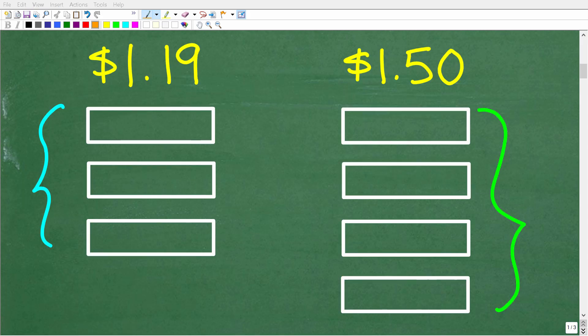So let's take a look at this problem visually. Over here, we can get three protein bars for $1.19, or we can get four protein bars for $1.50. So which is the better deal?